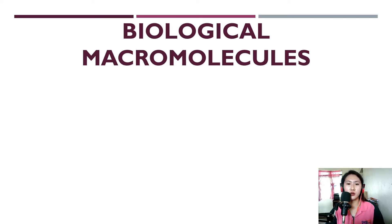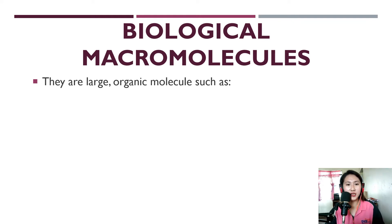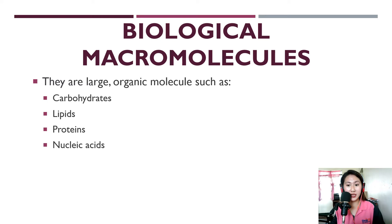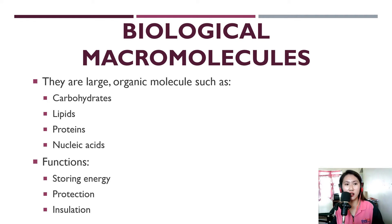So what are biological macromolecules? They are large organic molecules. When we say organic molecules, these are molecules or compounds made up of hydrocarbons — carbon and hydrogen atoms. Some of these also have oxygen, nitrogen, and phosphorus. Some classifications of biological macromolecules are carbohydrates, lipids, proteins, and nucleic acids. Some of their functions are storing energy, protection, and insulation.